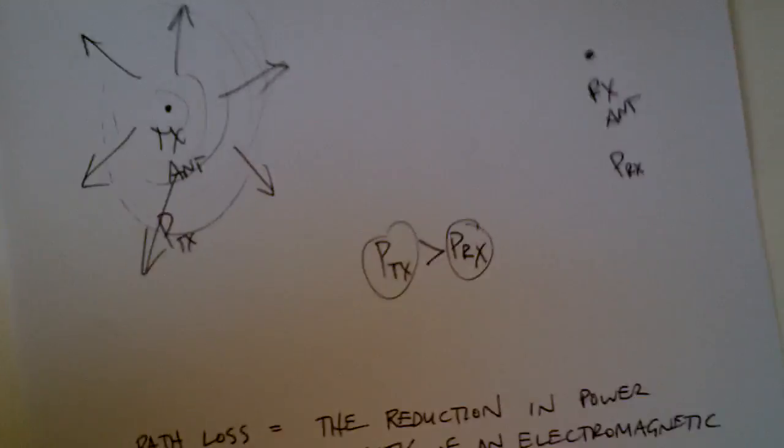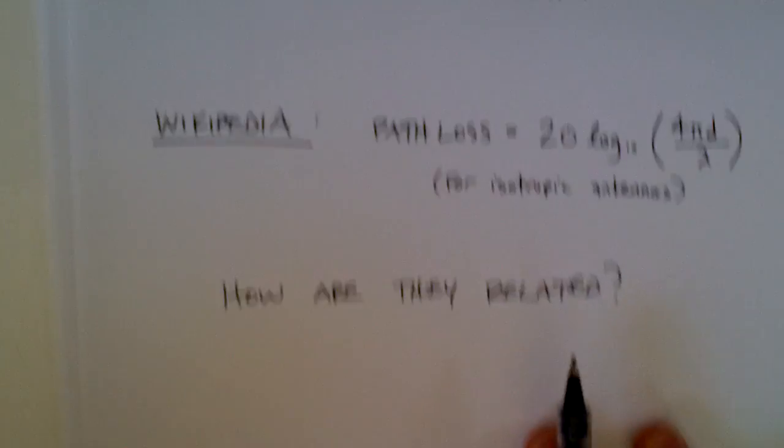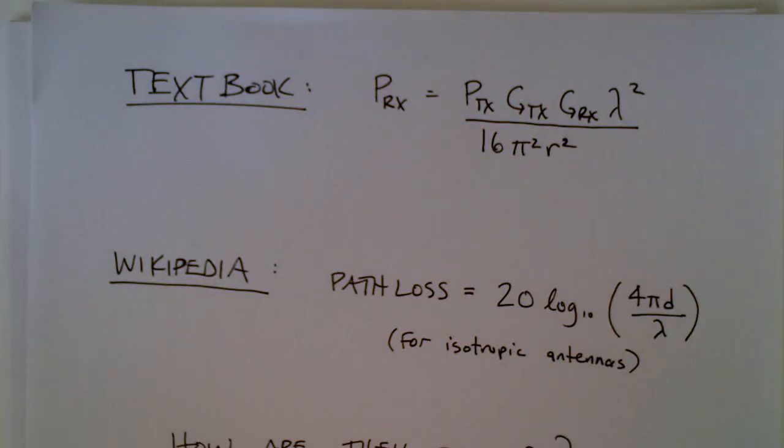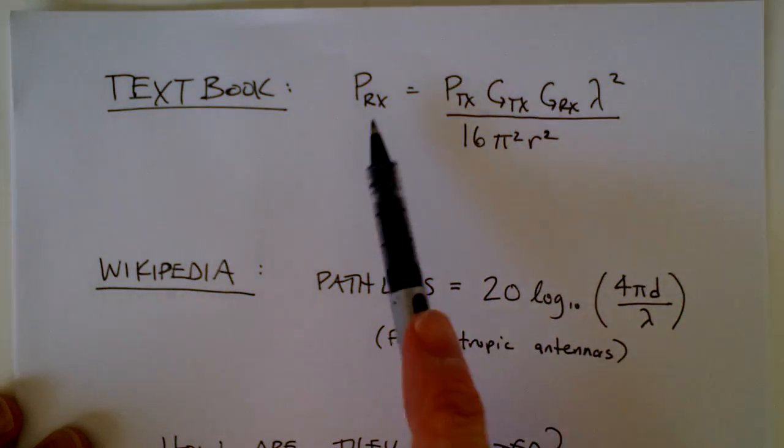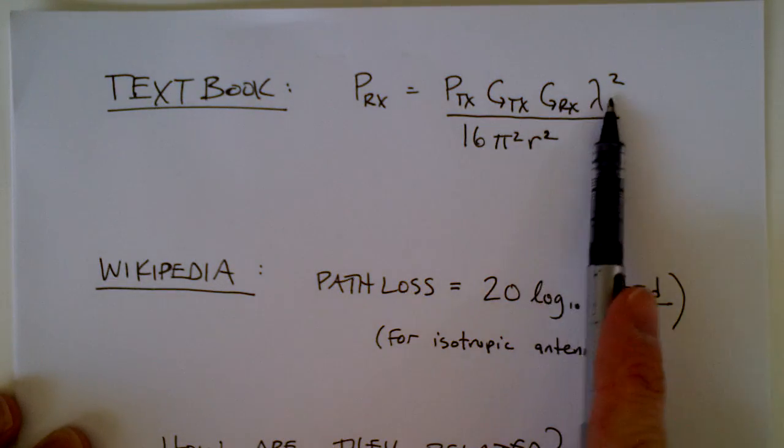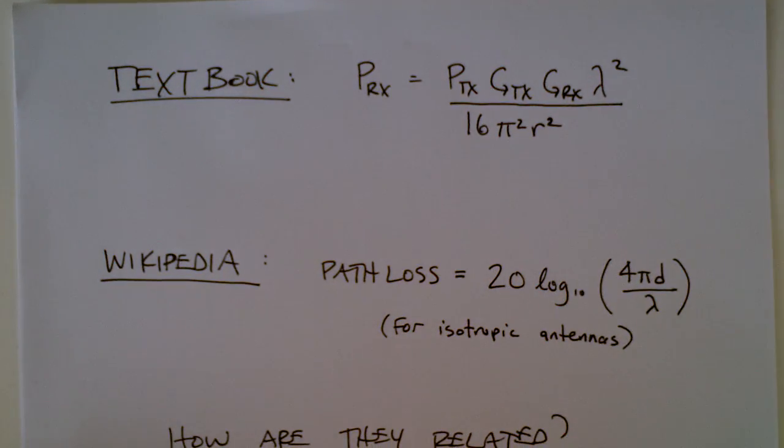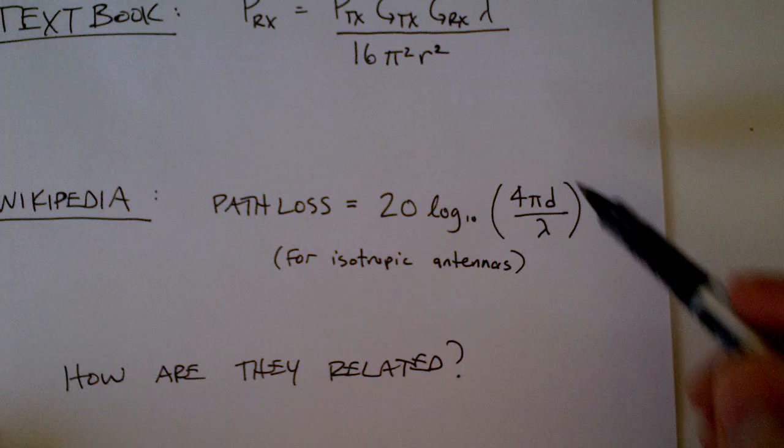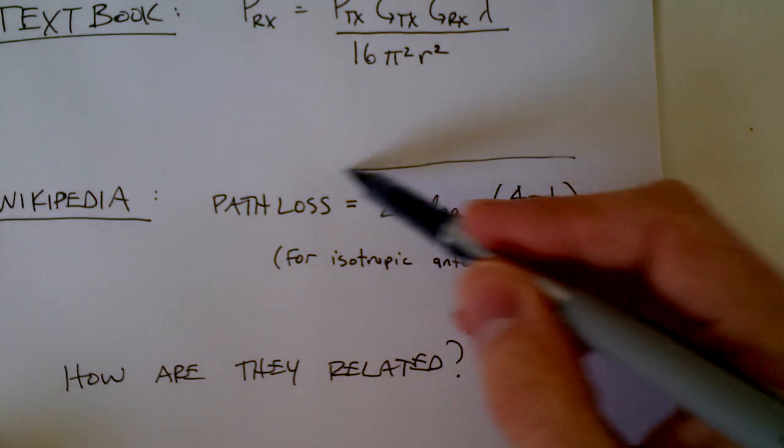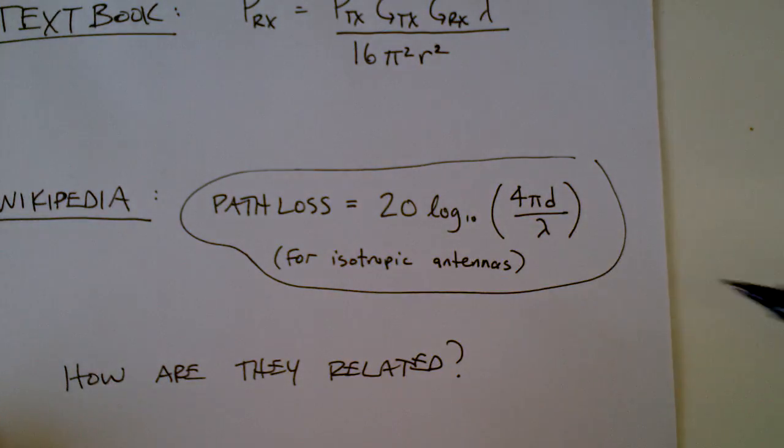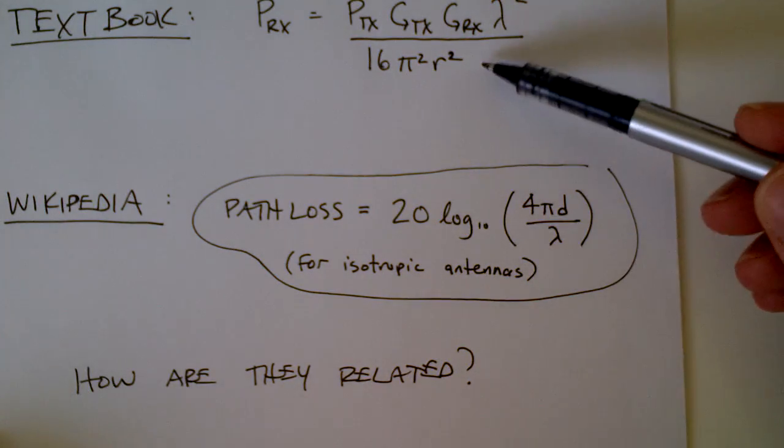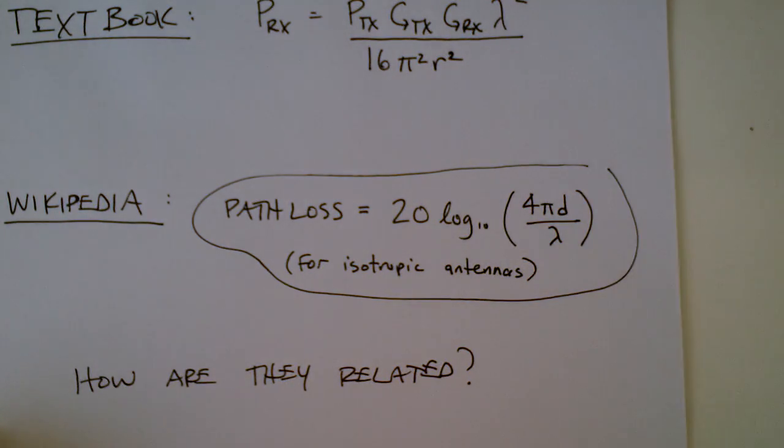So how does that relate to what you already know about power received? The textbook has a formula for calculating the received power with transmit power, gain of the antennas, wavelength and that kind of stuff. You look up path loss in Wikipedia and it gives you this formula here. So the question you might have is, how does this relate to this here? We're going to figure that out.